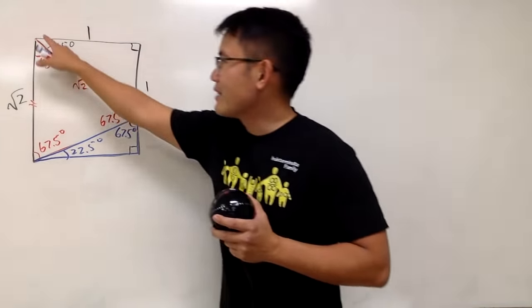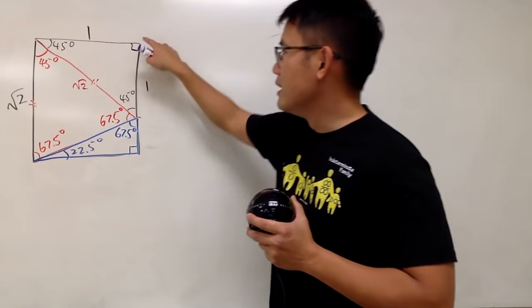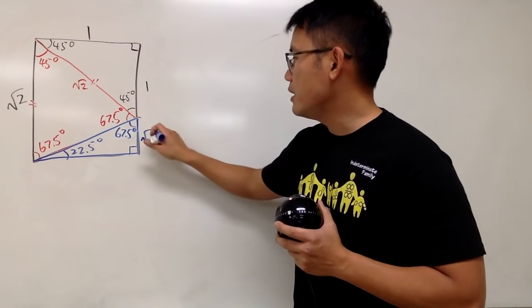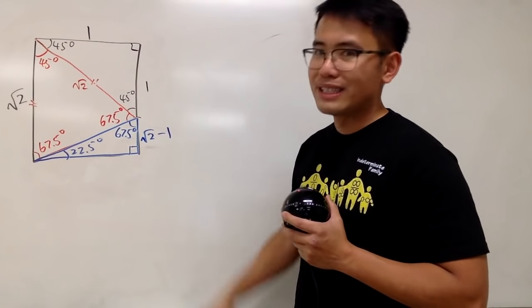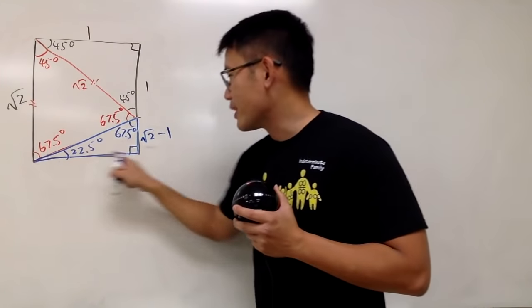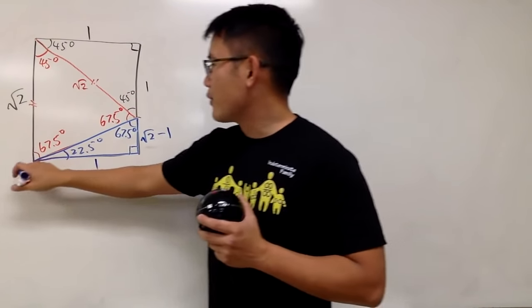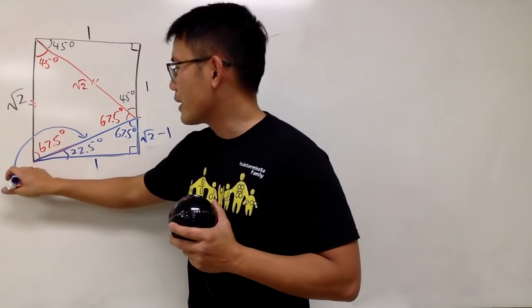And as we all know, from here to here is square root of 2. This much is 1 already. That means this blue portion has to be square root of 2 minus 1. And this right here is, of course, just 1.